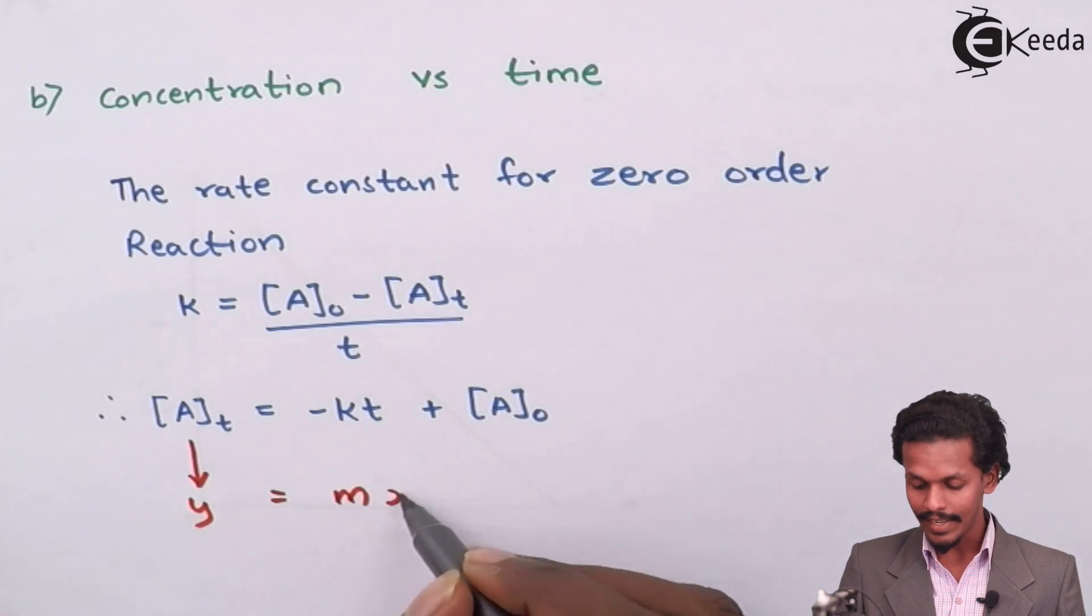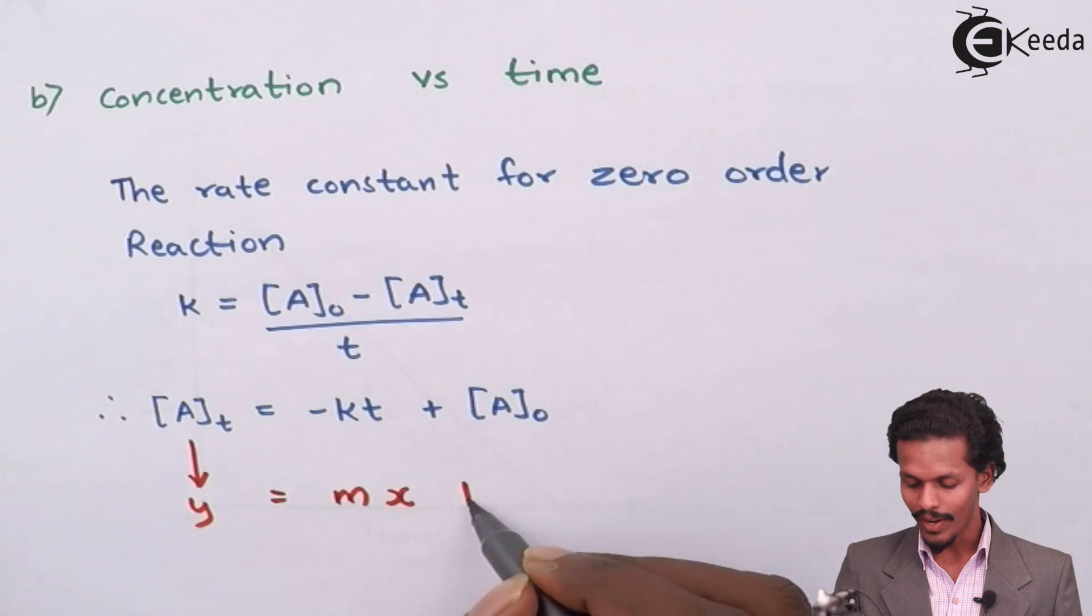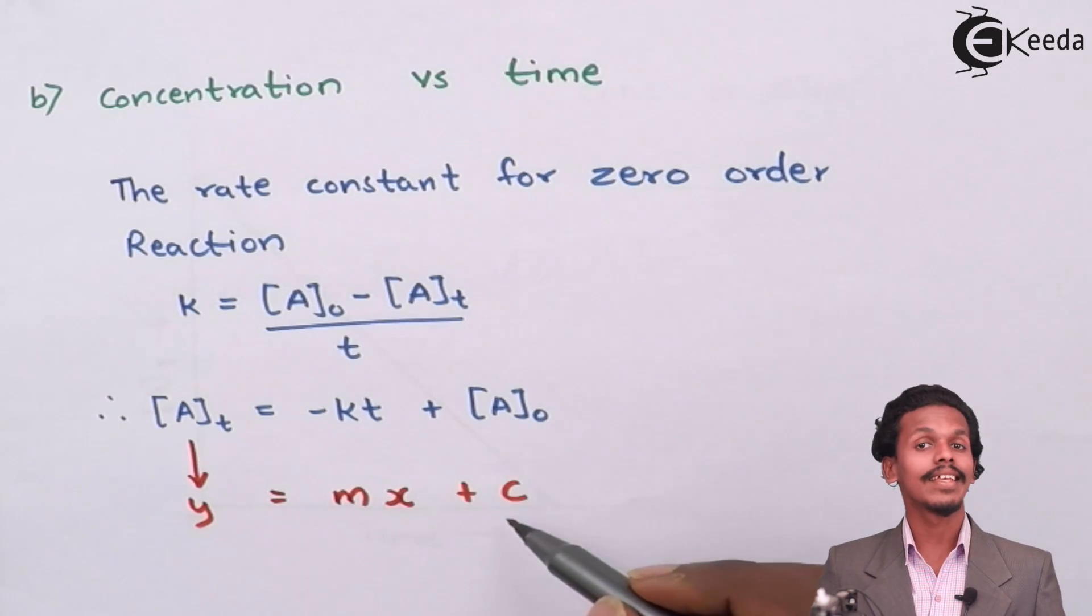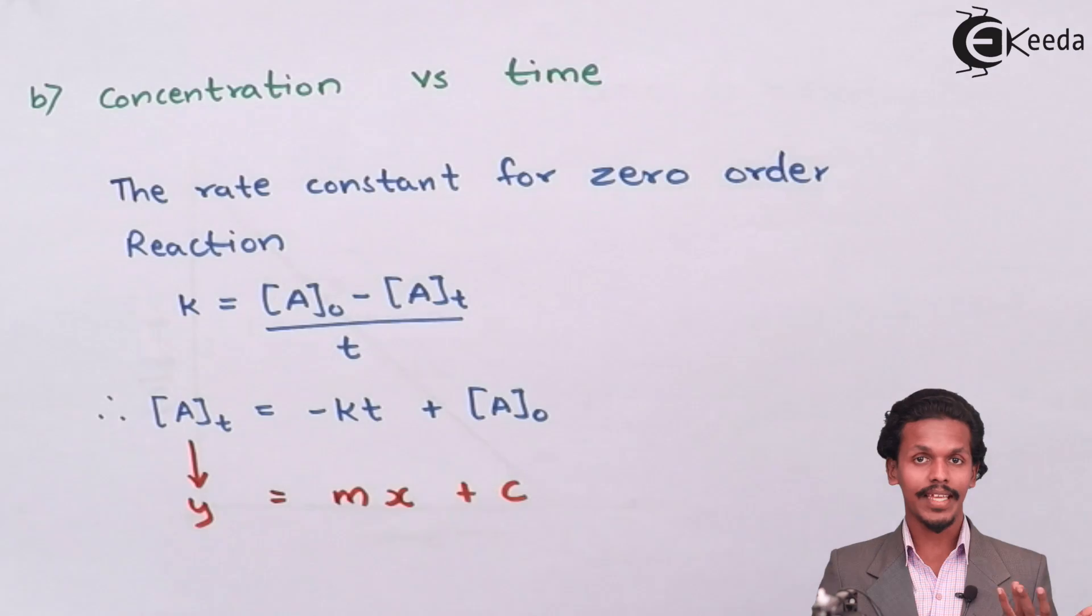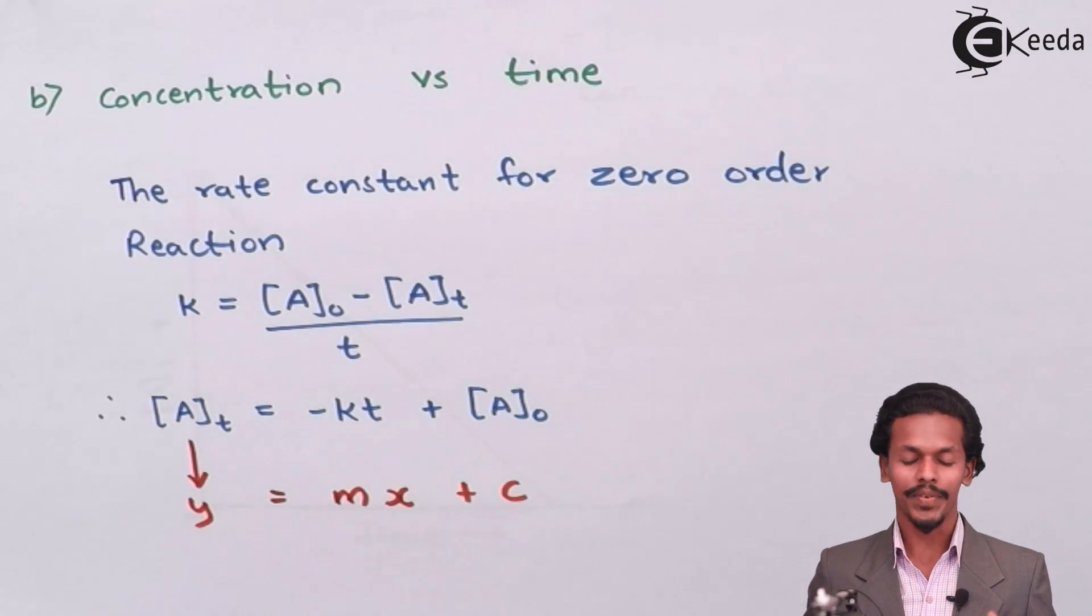the t acts like x, while A0 is the constant that we get through this equation. So let us see the graph of it.